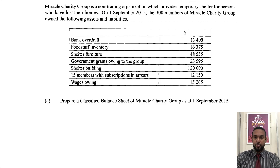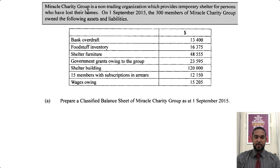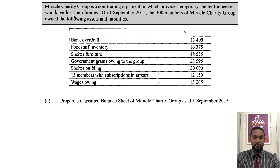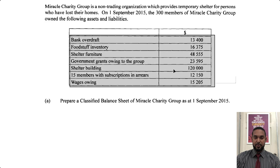So as usual, we're going to take a read of the information. Miracle Charity Group is a non-trading, nonprofit organization which provides temporary shelter for persons who have lost their homes. On 1 September 2015, the 300 members of Miracle Charity Group owned the following assets and liabilities: bank overdraft, foodstuff inventory, shelter furniture, government grants owing to the group, shelter building, 15 members with subscriptions in arrears, and wages owing.